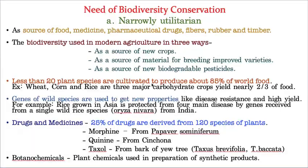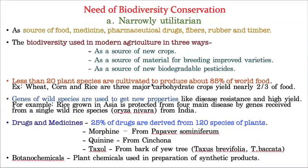There are many species of plants on this earth, but we are using only 20 plant species as cultivated crops to produce food for 85 percent of the world population. That means out of millions of plant species on earth, we are using only 20 plant species to feed 85 percent of the world population.